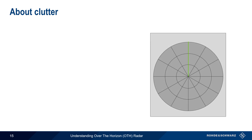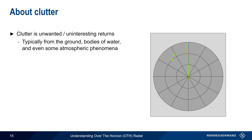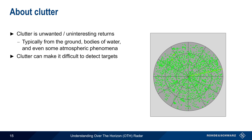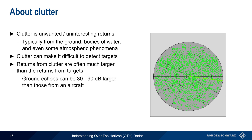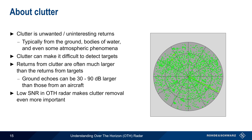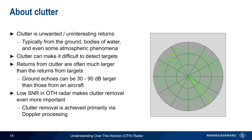Another factor limiting the ability to see radar returns is clutter — unwanted or uninteresting returns, most often from the ground or bodies of water, but in some cases caused by atmospheric or ionospheric phenomena. High levels of clutter can make it difficult or impossible to detect targets, because clutter returns are often much larger than actual target returns. For example, echoes from the surrounding ground can be 30 to 90 dB higher than those from an aircraft. Because OTH radar returns often have relatively low signal-to-noise ratios, clutter removal becomes even more critical.